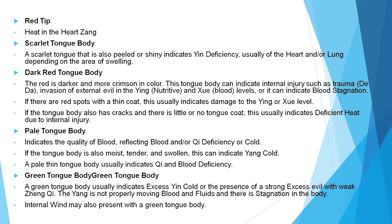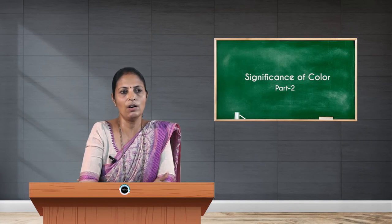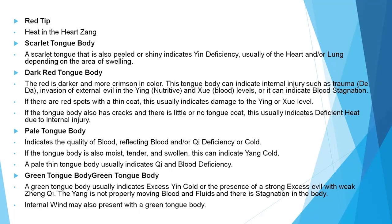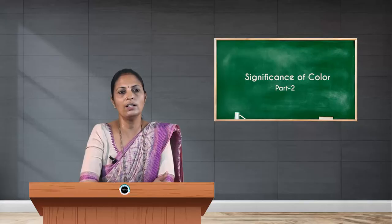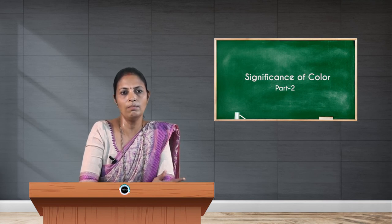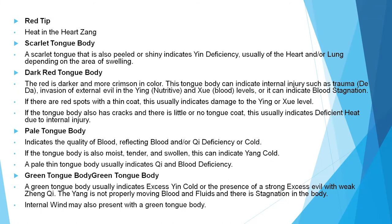A dark red tongue body, sometimes appearing more crimson, may indicate injury or trauma. A pale tongue body indicates the quality of blood, reflecting blood or chi deficiency. In conventional practice, a pale tongue is also indicative of anemia. If the tongue body is moist, tender, and swollen, that can indicate yang cold. A pale thin tongue body usually indicates chi and blood deficiency.